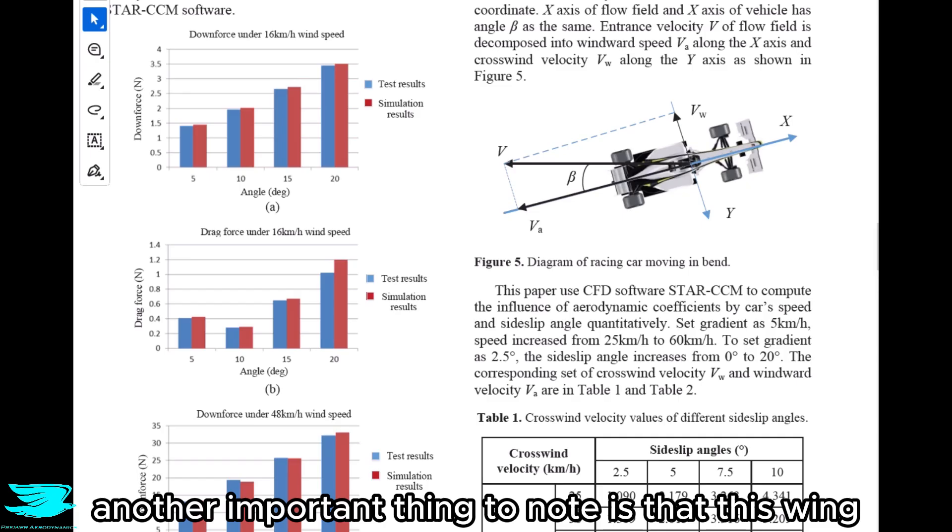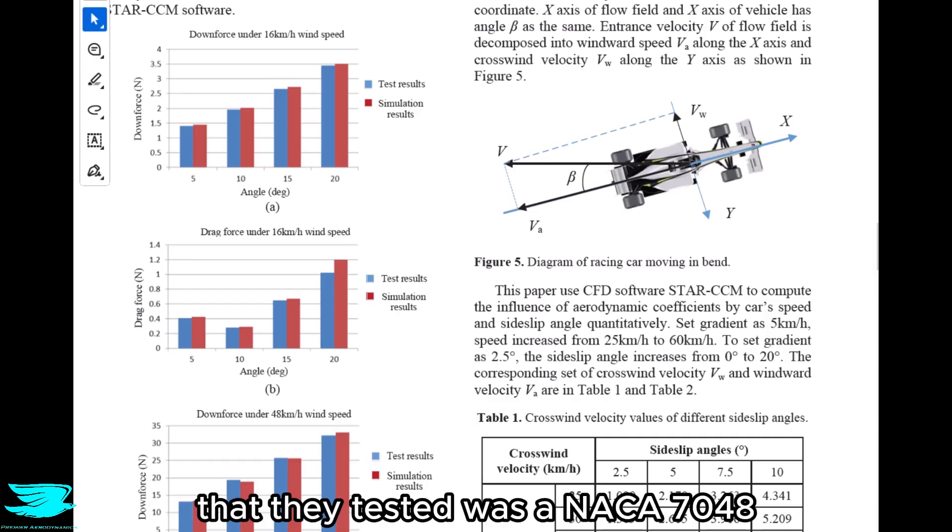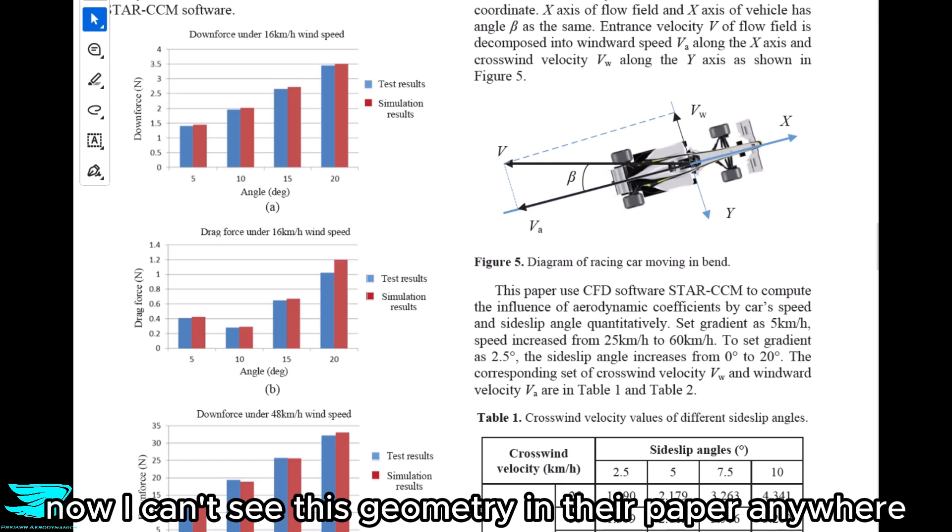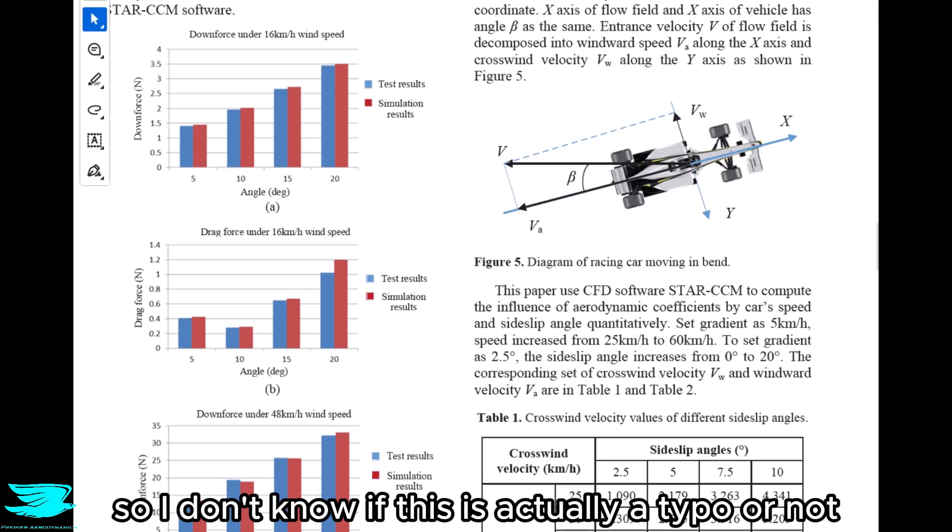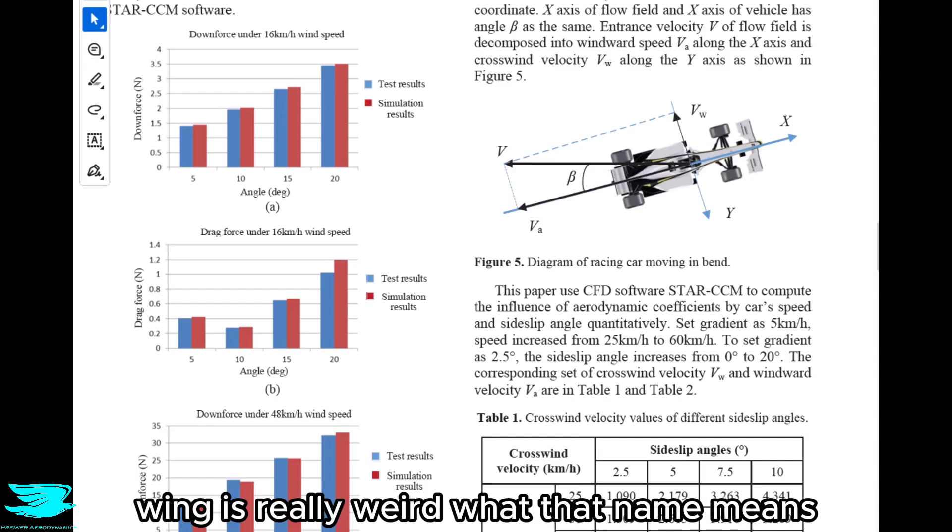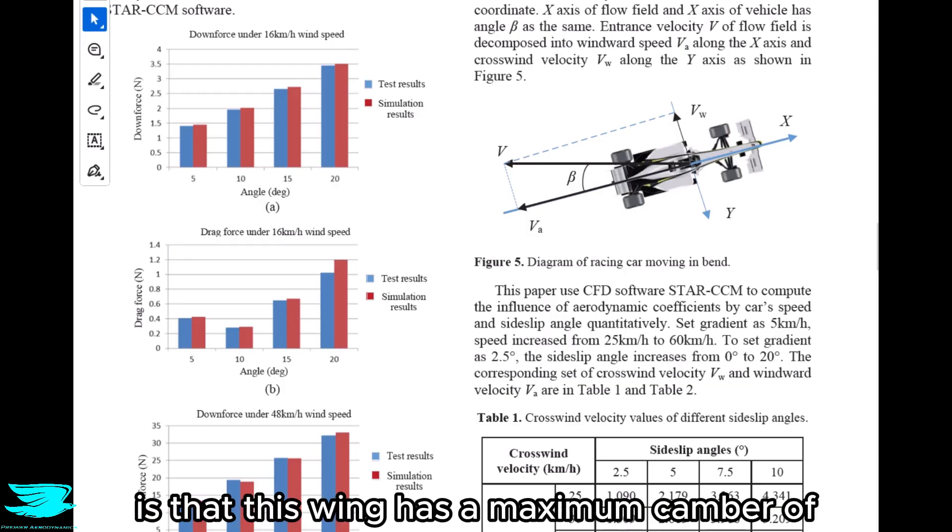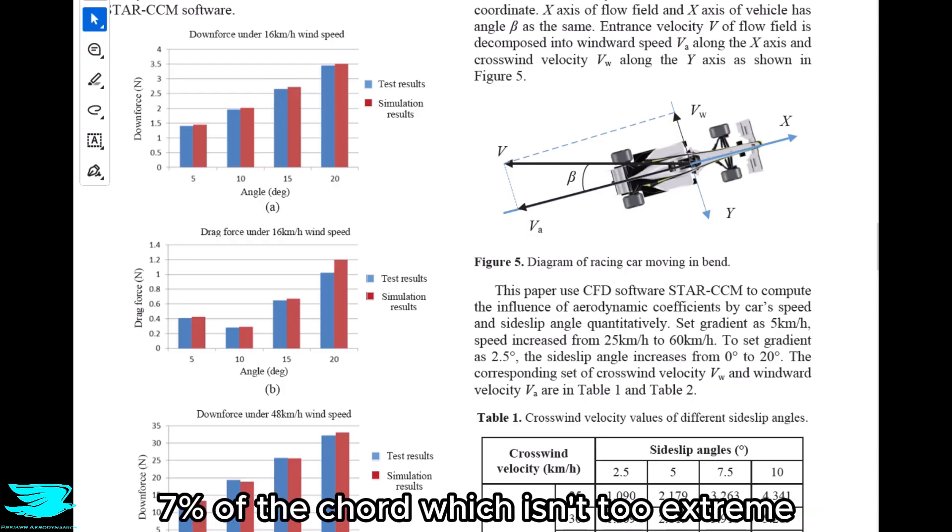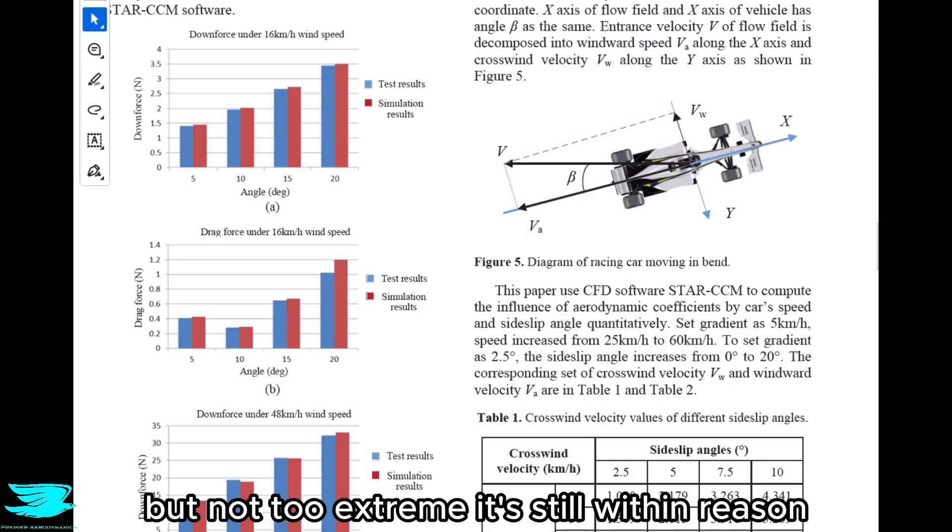Another important thing to note is that this wing they tested was a NACA 7048. Now, I can't see this geometry in their paper anywhere, so I don't know if this is actually a typo or not. The reason I think that is because a NACA 7048 wing is really weird. What that name means is that this wing has a maximum camber of 7% of the chord, which isn't too extreme. It's a little bit on the high end, but not too extreme.